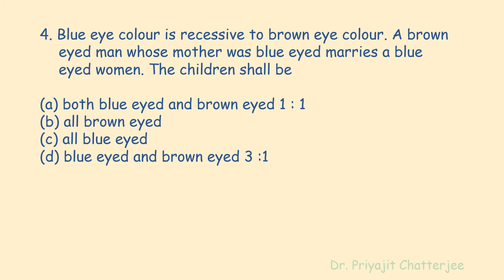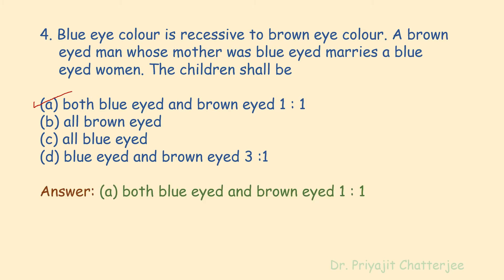The fourth question: blue eye color is recessive to brown eye color. A brown-eyed man whose mother was blue-eyed marries a blue-eyed woman. The options are: A) both blue-eyed and brown-eyed in 1:1 ratio; B) all brown-eyed; C) all blue-eyed; D) blue-eyed and brown-eyed in 3:1 ratio. The correct answer is option A — 1:1 — because a heterozygous brown-eyed male crossed with a homozygous blue-eyed female gives 50% brown-eyed and 50% blue-eyed children. This is a test cross.